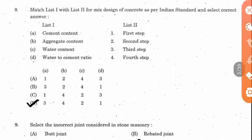Question number 8: Match list 1 with list 2. The steps involve cement content, aggregate content, and the design sequence. The first step is to fix the water-cement ratio, followed by cement content as the second step. The third step is the first listed item, and the fourth step is aggregate content — both fine and coarse. So option D with the order 3, 4, 2, 1 is the right answer.